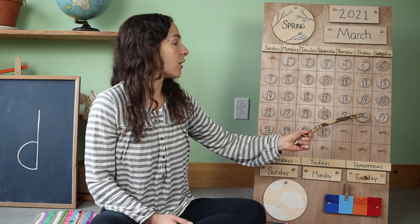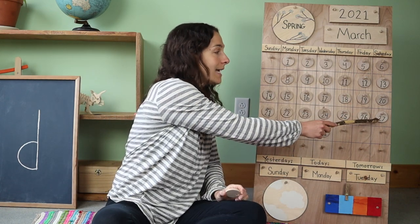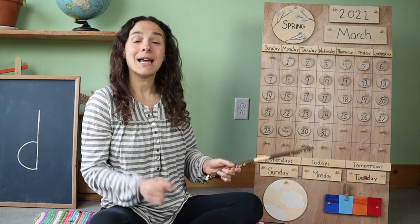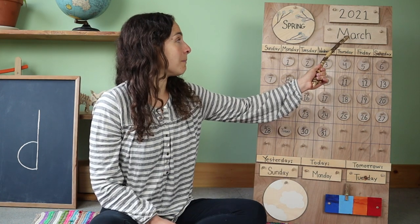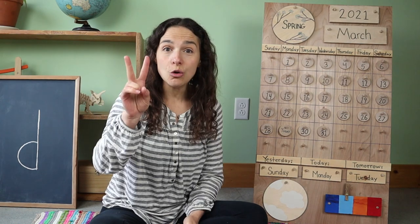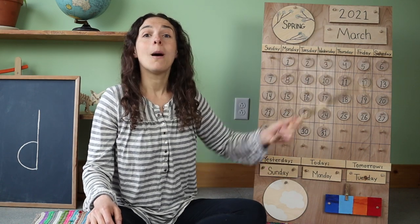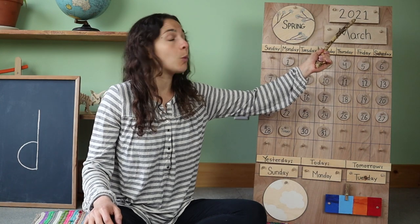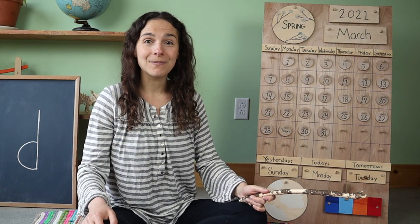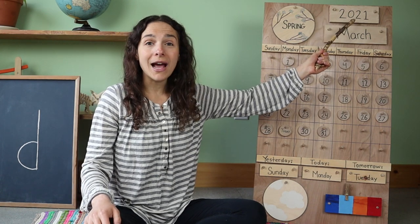So let's move the chip over from 26 — that was the last time that we met — to 27, 28, and put it right on the number 29 because today is March 29th. Right up here we have the year. There are two ways that you can say the year: 2021, or you can also say 2021. Both ways are correct. Will you say the date one more time with me? Today is March 29th, 2021.